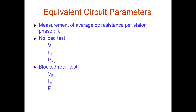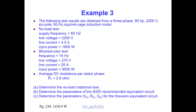From these tests we obtain R2, Xm, and related values. R1 (the stator resistance) is obtained directly from the DC resistance measurement. This example will be discussed in class. Thank you very much — that's all for this video, and we will meet again soon.